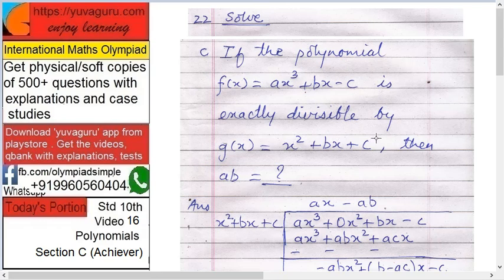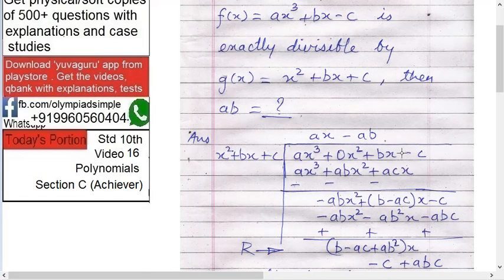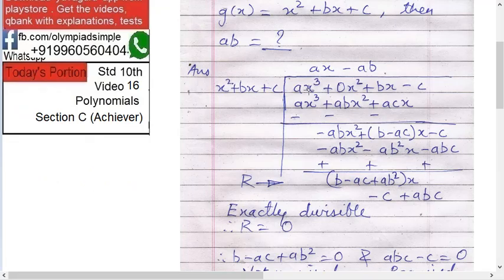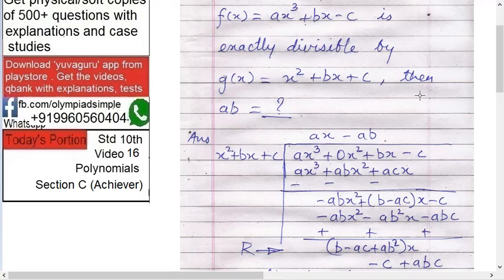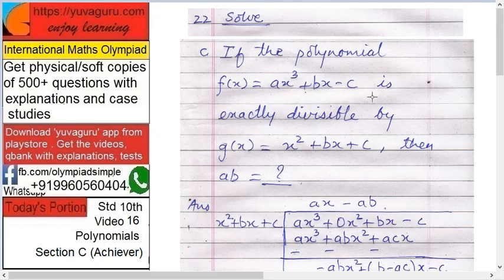x², then ax, then 1, x raised to 0. That's correct. So dividend you have to change. What change? See here. ax³ + 0x² + bx - c. That is a required thing which we have to do. Always bring all the x raised to in linear fashion. So x³, x², x and x raised to 0. And here x² + bx + c as it is.